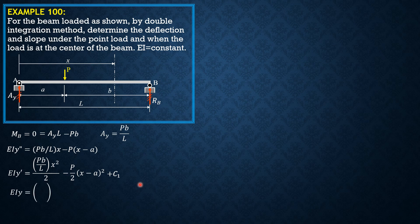Integrating further, EIY equals PB over 6L times X cubed, minus P over 6 times the quantity X minus A cubed, plus C sub 1 times X. There is no C sub 2 because the deflection at A is zero when X is zero.